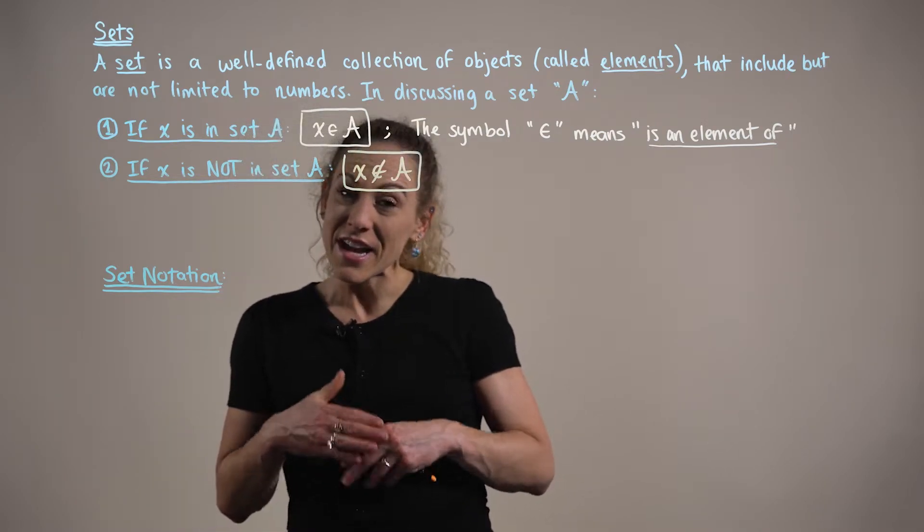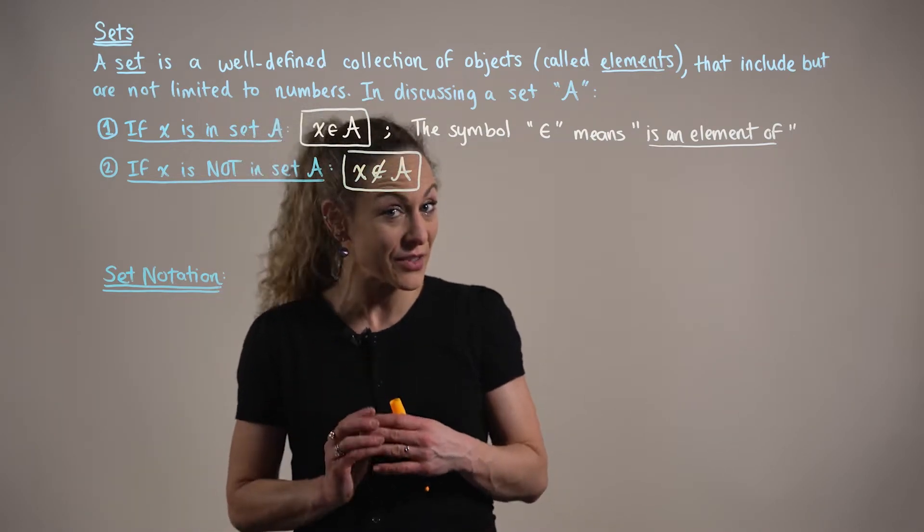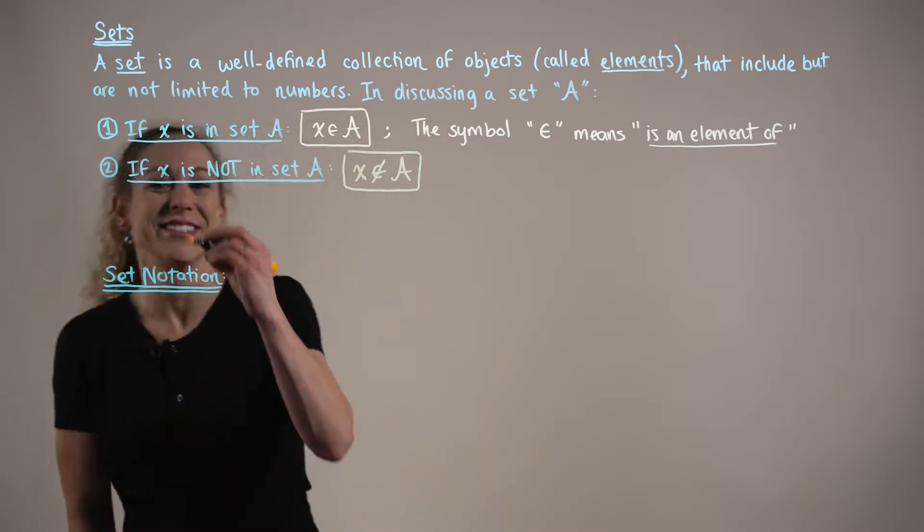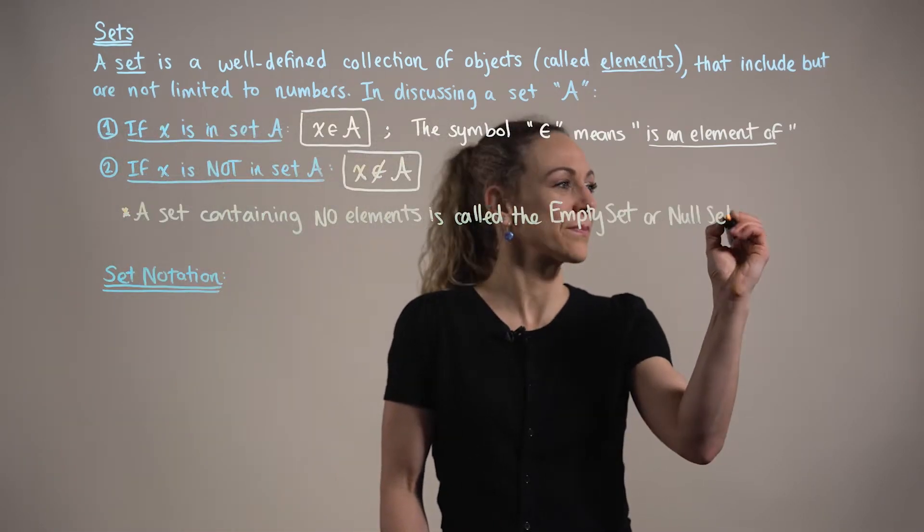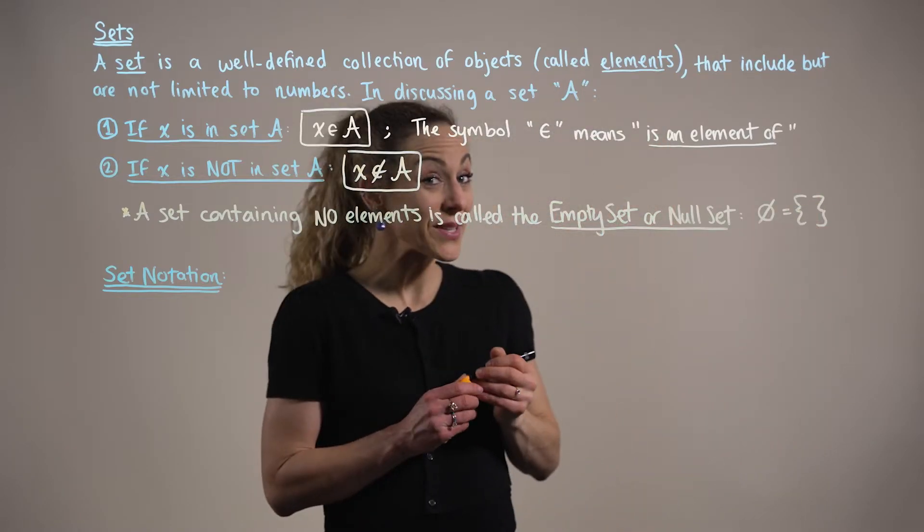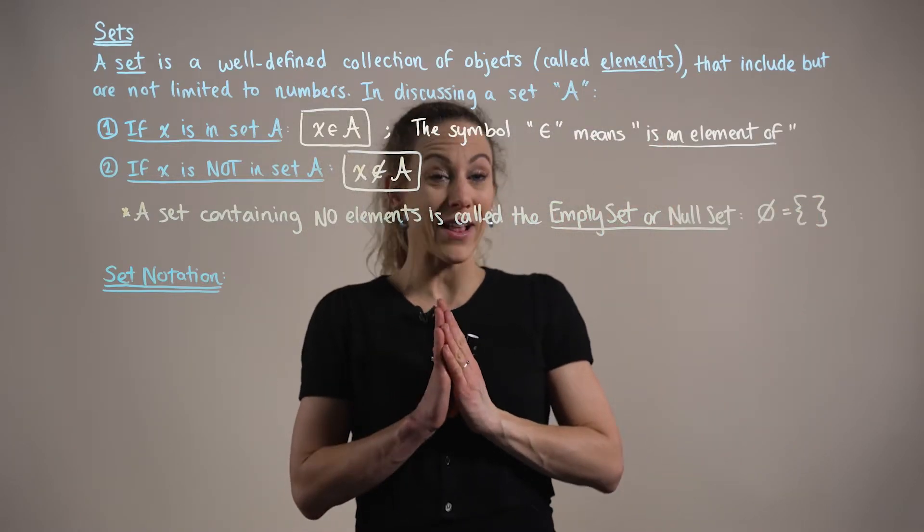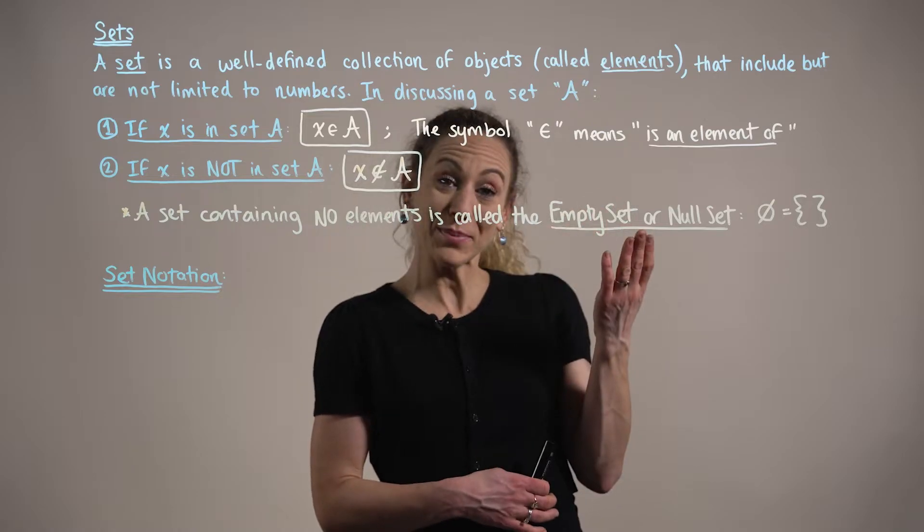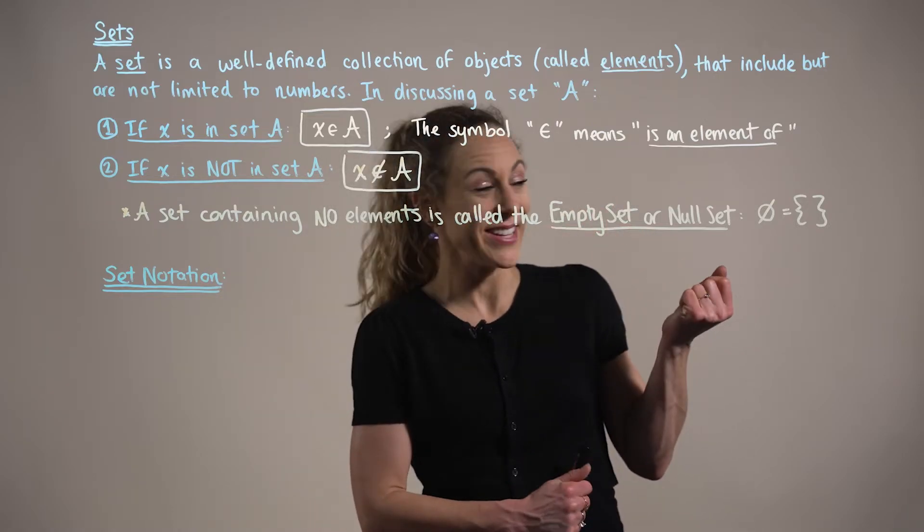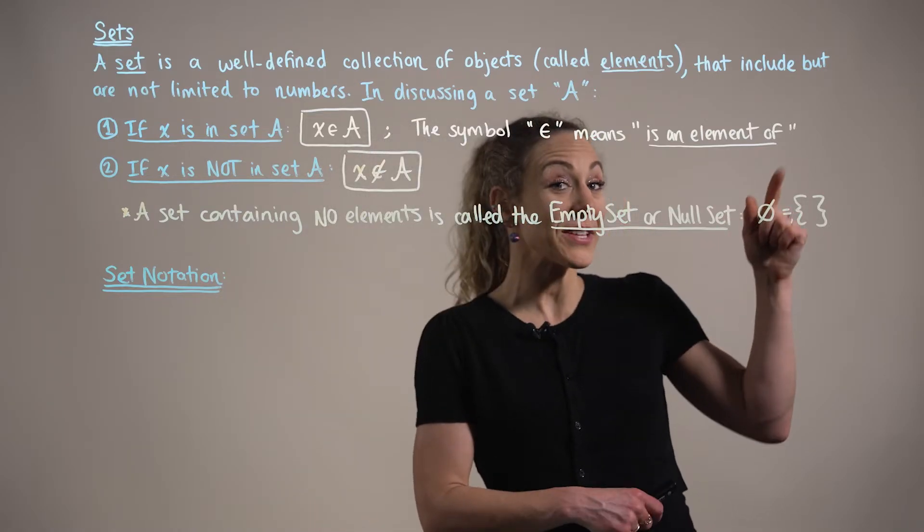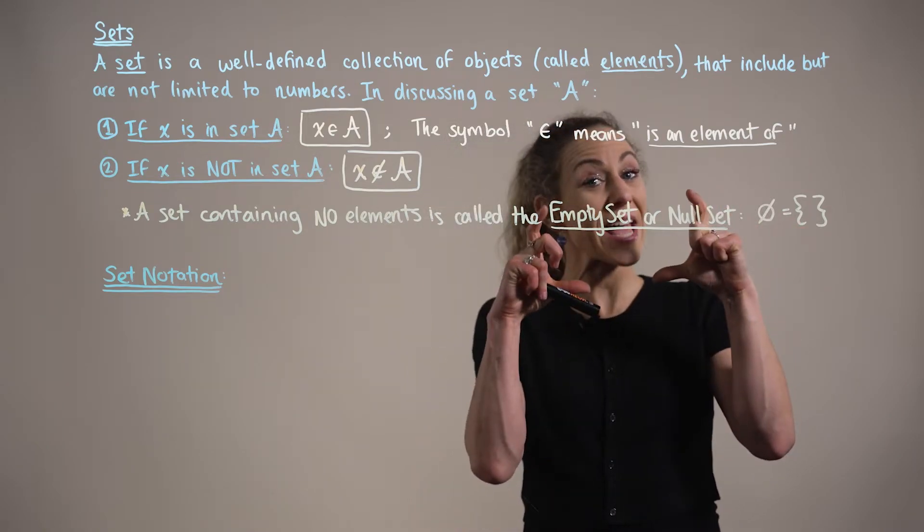Now last but not least, how do we define a set that contains no elements? We say that a set containing no elements is called either the empty set or the null set, and we denote this as a zero with a dash through it, or simply empty braces.